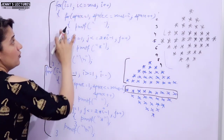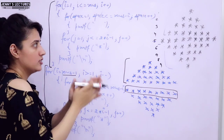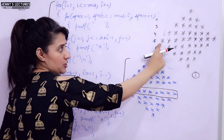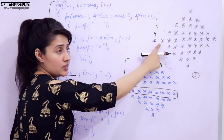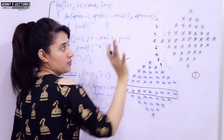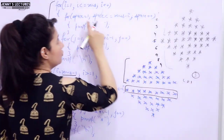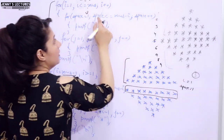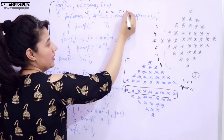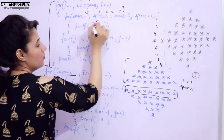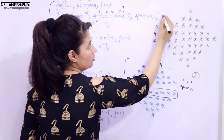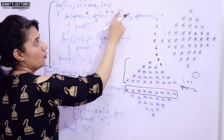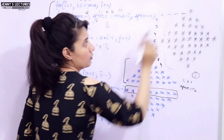Let me do a dry run. It will ask the user to enter the number of rows — suppose five. The first outer loop: `i = 1`, one less than or equal to five, condition true, we enter. Space equals one. One less than or equal to `rows minus i` — that is five minus one equals four — condition true, one space is printed. The space loop executes four times, printing four spaces.